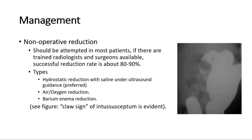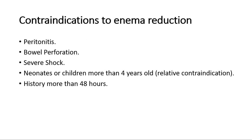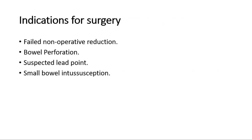For reduction, non-operative reduction has three types: hydrostatic reduction with saline under ultrasound guidance (the preferred option), air or oxygen reduction, or barium enema reduction. This should be attempted in most patients. However, contraindications to enema reduction include peritonitis, perforated bowel, severe shock, neonates or children over 4 years old, or a history of more than 48 hours — as there is a higher risk of bowel perforation. If non-operative reduction is contraindicated, we proceed to surgery. Indications for surgery include failed non-operative reduction, bowel perforation, a suspected lead point, or small bowel intussusception.